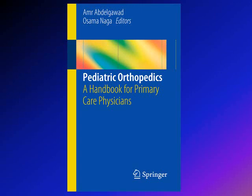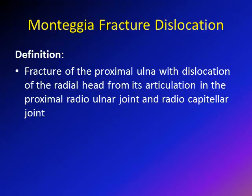A good source that you can use is this book, Pediatric Orthopedics, a handbook for primary care physicians by myself and Dr. Naga. So what is Monteggia fracture dislocation? It is a fracture of the proximal ulna, which is the upper part of the ulna, and at the same time there will be dislocation of the radial head from its articulation with the proximal radio-ulnar joint and with the radiocapitellar joint, as we're going to see later on.